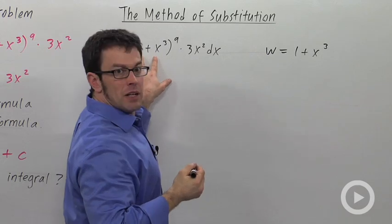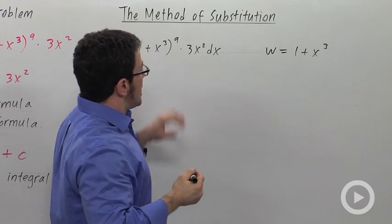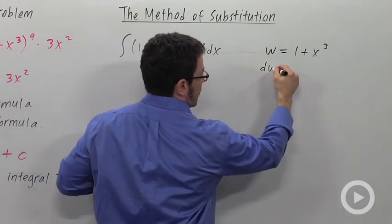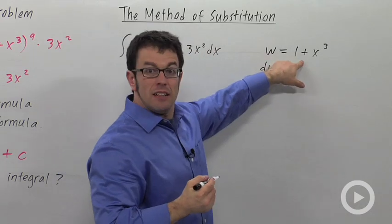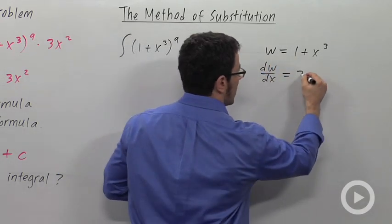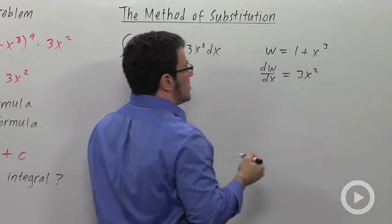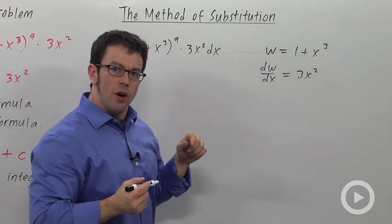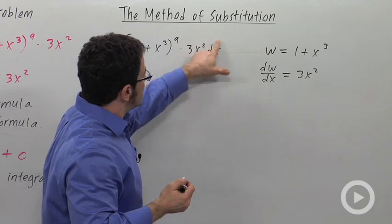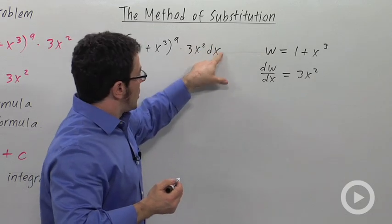And then I need the derivative of that with respect to x. The derivative of w is going to be 3x squared. And very important, whenever you have an integral, you always have this little dx or d something. This is called a differential.